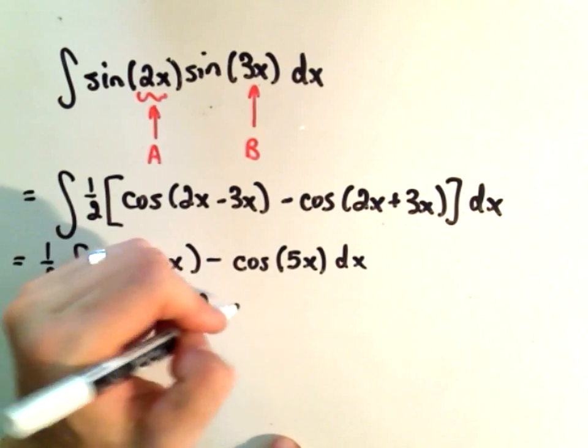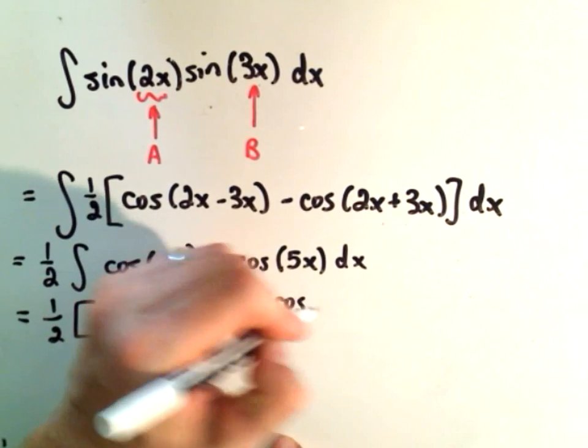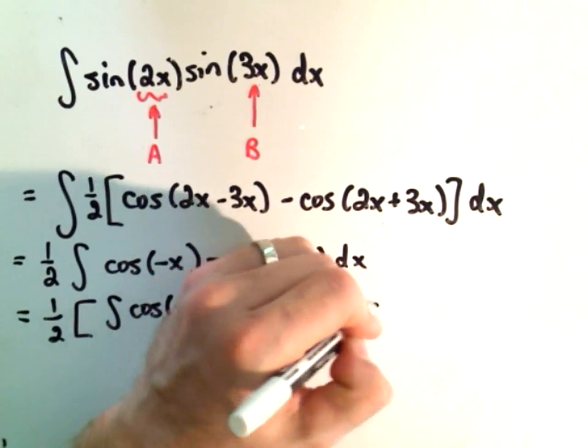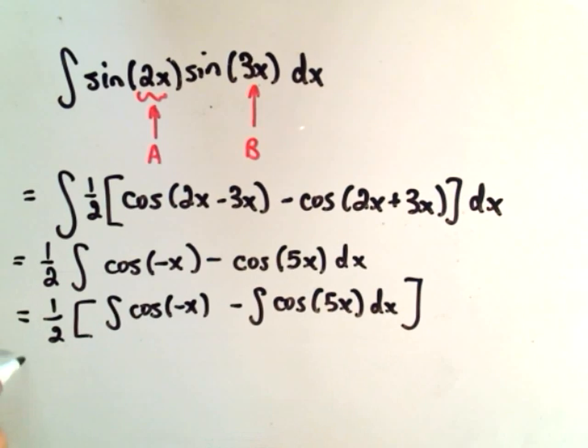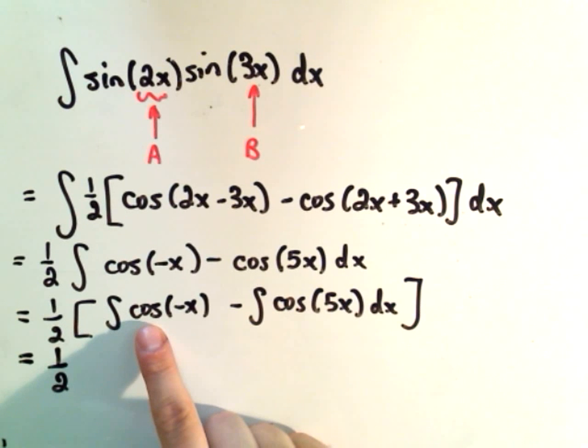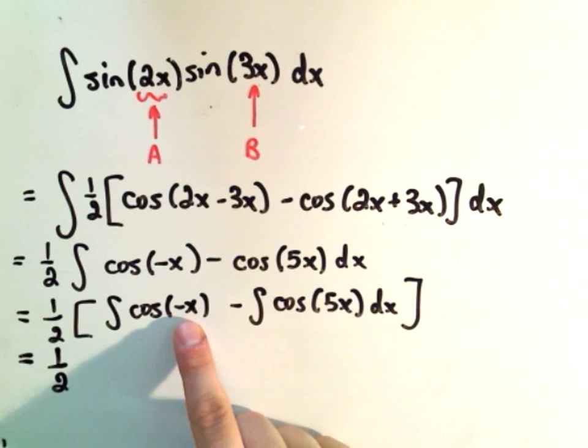Just do a u-substitution. And I think at the end, if you distribute, you'll get the antiderivative of, you would end up with basically a cosine of u, but you would have a negative out front.